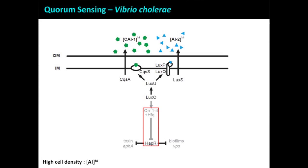For cholera, the goal of getting in your intestine is to make copies of itself — two, four, eight, sixteen. When it gets to high densities, it's time to go.